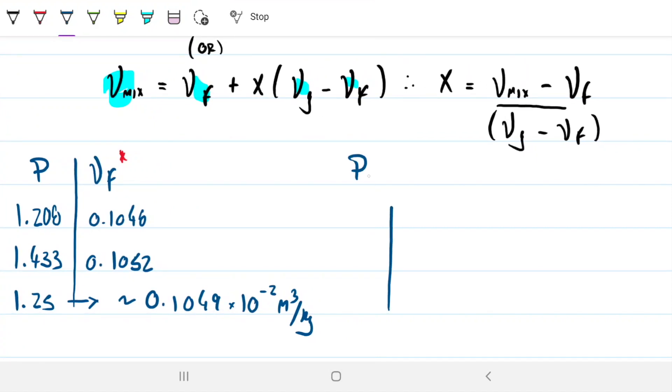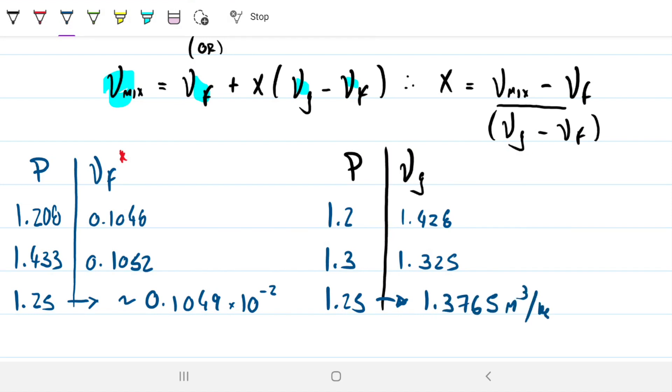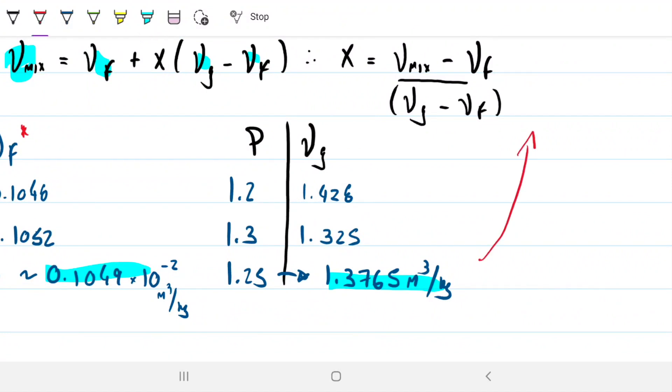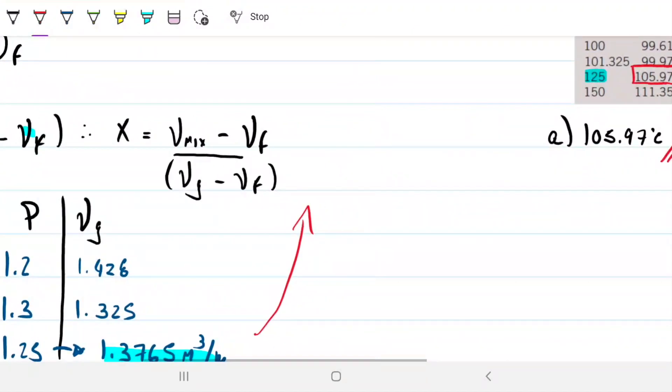And for the other one, if I'm doing it for the saturated vapor, then my values are going to be 1.2, 1.3, and I have 1.428, 1.325, and again, I'm looking for 1.25. So I could just do simple mean there instead of interpolating if I wanted to as well. And I get 1.3765 meters cubed per kilogram. So now we have the values that we need. Remember, we needed this guy and this guy to be able to go in here and find the quality. So let's go ahead and find the quality now.